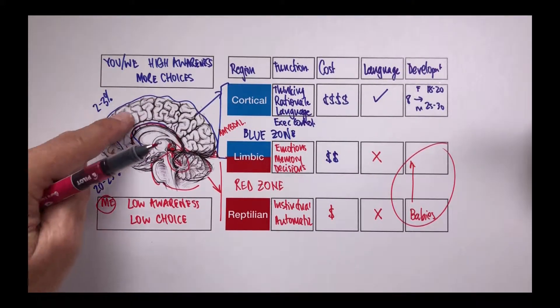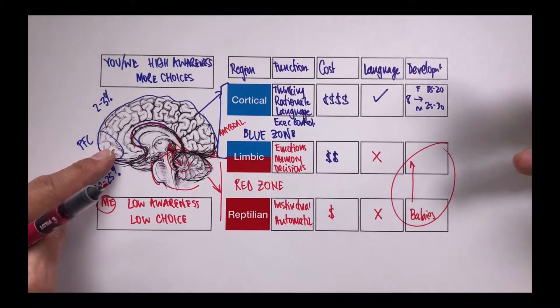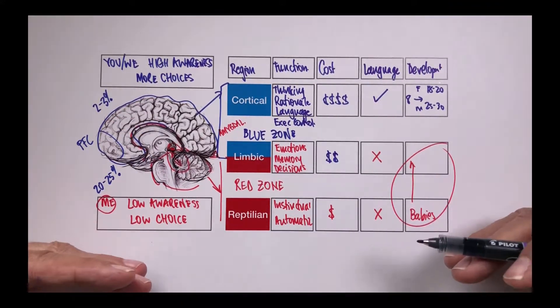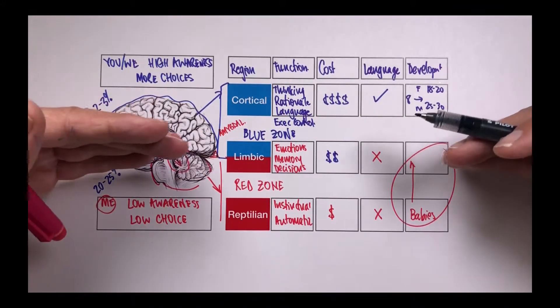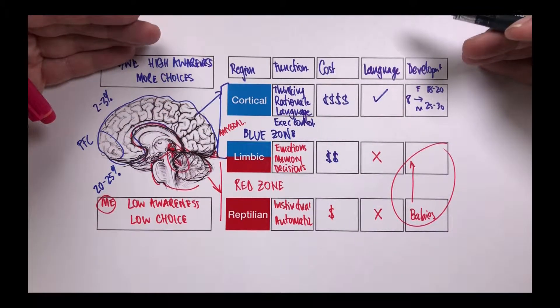This is where the executive control of the prefrontal cortex really comes into play, where we can make a choice that's actually better for someone else than ourselves. We know that young children can't do that, but as they get older and as they develop, and if they develop well, then their capacity to do this actually increases over time.